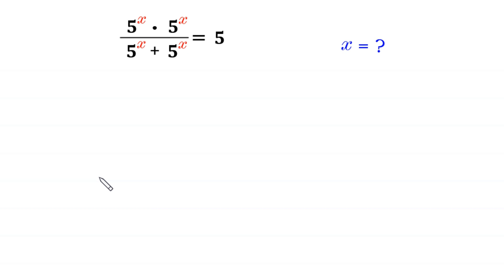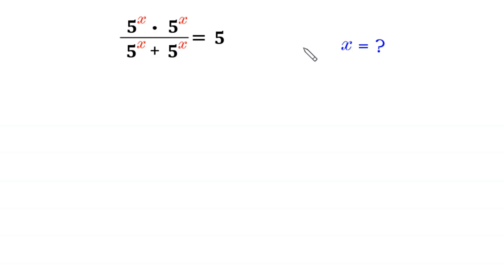Hello, welcome to how to solve this very nice exponential equation: 5 to the power x times 5 to the power x, divided by 5 to the power x plus 5 to the power x, is equal to 5. We need to find the value of x.